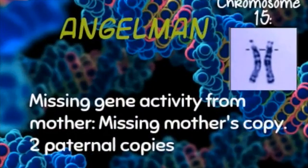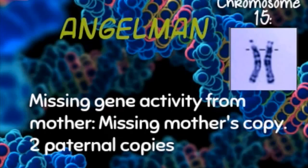Angelman, however, is the complete opposite. It's when the gene activity from the mother is missing, or the mother's copy is missing, which leads to the child having two paternal copies. This leads to learning difficulties, speech problems, seizures, jerky movements, and unusual behaviors.